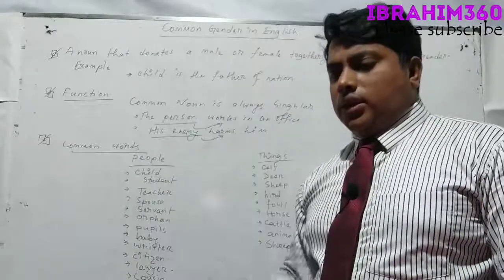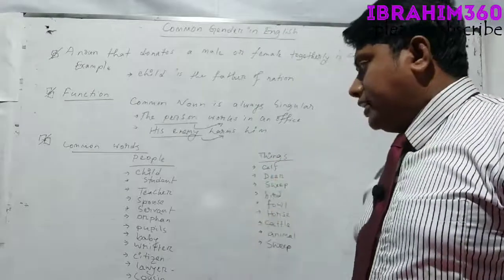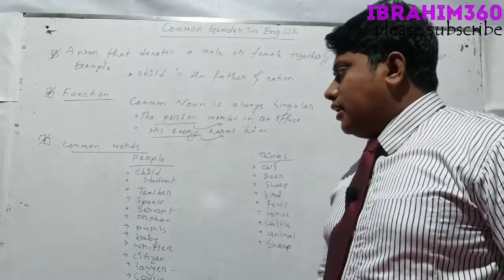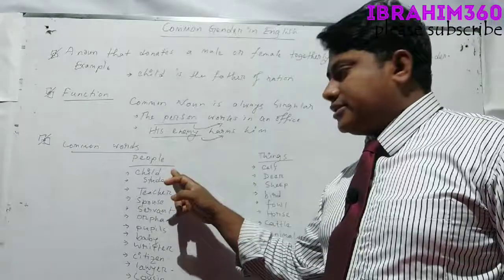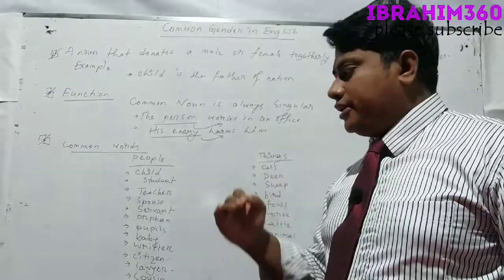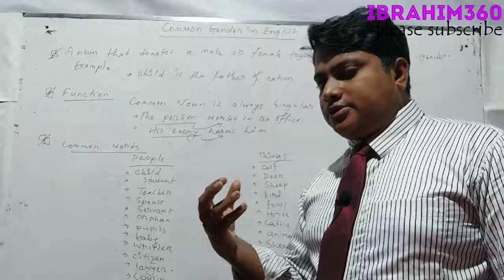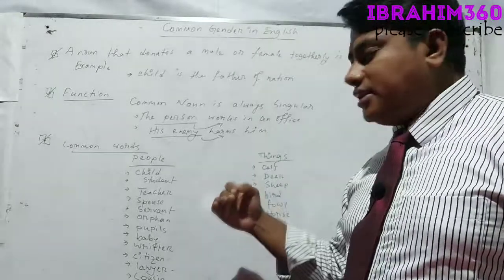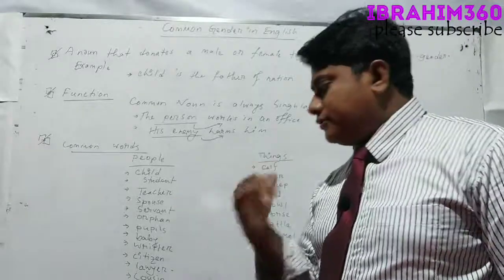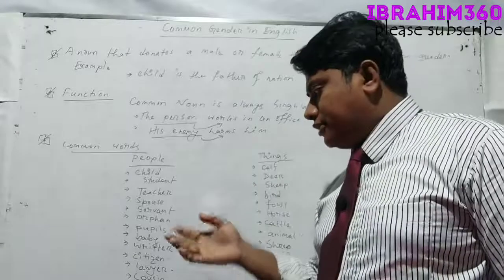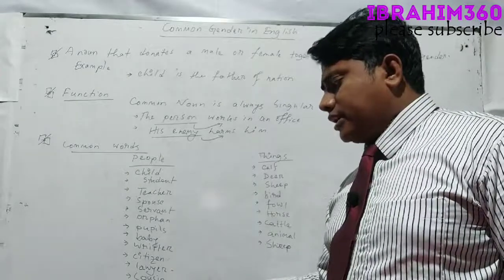Now, common words - what words are there? Some words are there that particularly these words I have taken here in two categories. The common gender words that are here, I have given examples with male and female. For example: child - it indicates of course boy and girls; student - both male and female students; teacher - male teacher, female teacher; spouse - husband, wife; servant - male and female workers; orphan - both male and female; pupils, baby, writer, citizen, lawyer, cousin, et cetera.